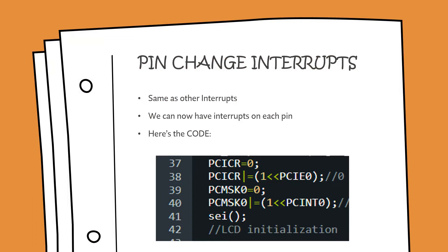The pin change interrupt is the same as any other interrupt. Basically it stops the microcontroller from going into the repeated void loop and tells it to do something else — something more important. As we have seen earlier in our video on timer interrupts, the interrupt enables the microcontroller to multitask. The advantage of pin change interrupts is that it enables the Arduino Uno to have an interrupt on almost every input pin.